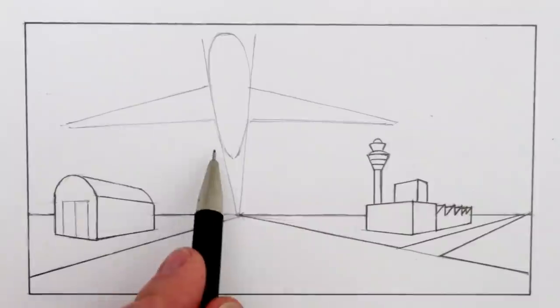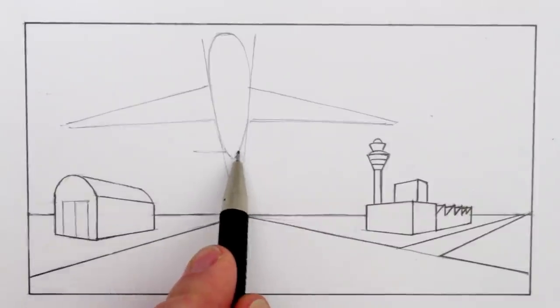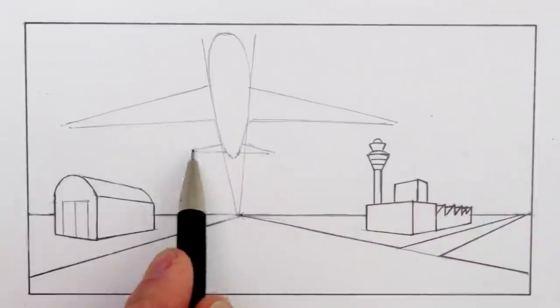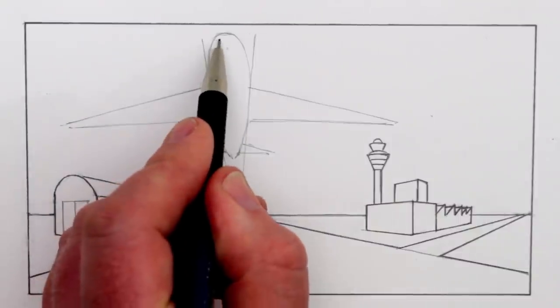We can now draw the tail wing, two simple triangles at the back of the plane. I can add a dot for the front centre of the plane and above this dot I'm going to draw a simple pilot's window.